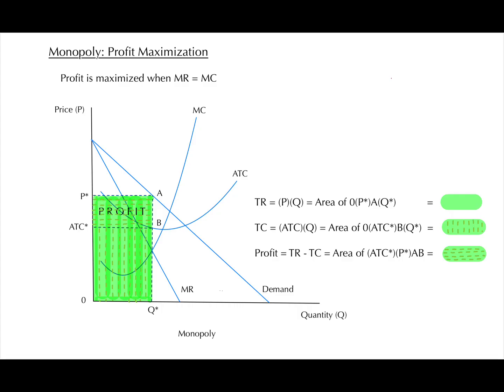This is because of one main reason. Firms in perfect competition are price takers, while a firm in a monopoly has market power.